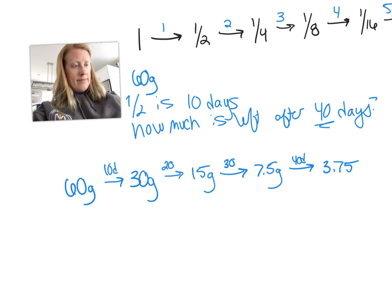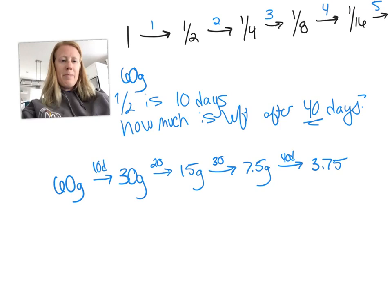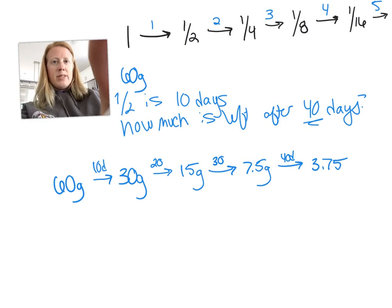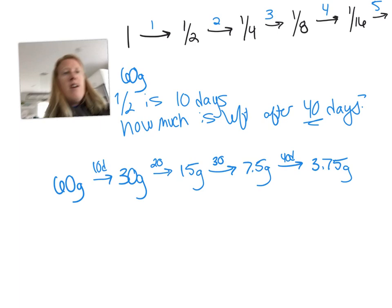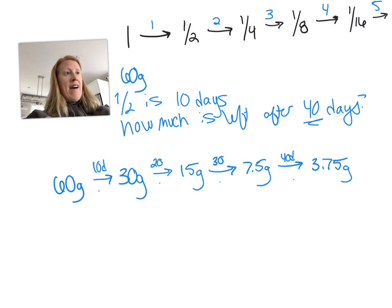So, here's the answer. This is 3.75 grams is left after 40 days. That's basically how you do a half-life calculation. How many half-lives did it go through? 1, 2, 3, 4. 4 half-lives. So, what you essentially could have done is said, 4 half-lives is 1/16th multiplied 1/16th by 60 and you would have gotten the same answer.